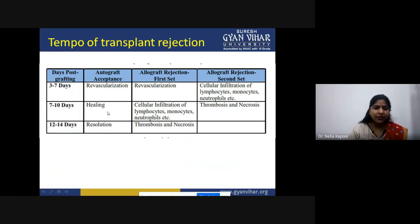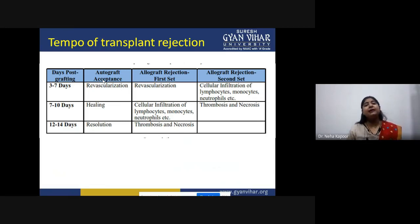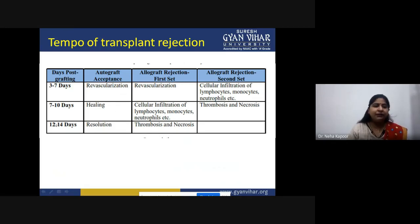Regarding the tempo of transplant rejection: for autografts, the chances of acceptance are higher because we are using self tissues. The timeline is: within three to seven days revascularization occurs, after seven to ten days healing begins, and after 12 to 14 days resolution occurs and the graft is accepted.